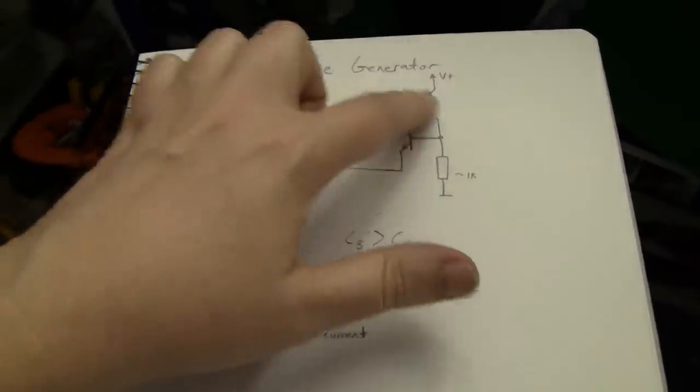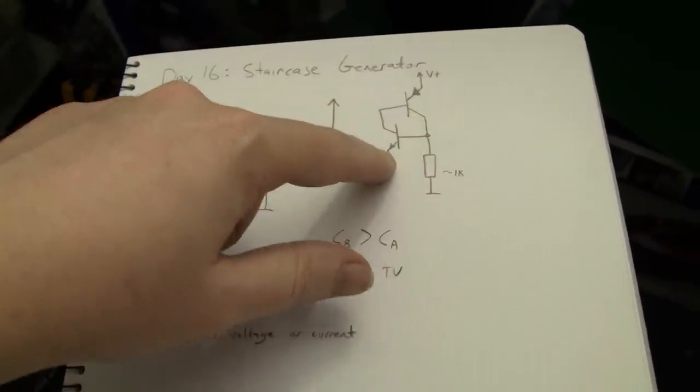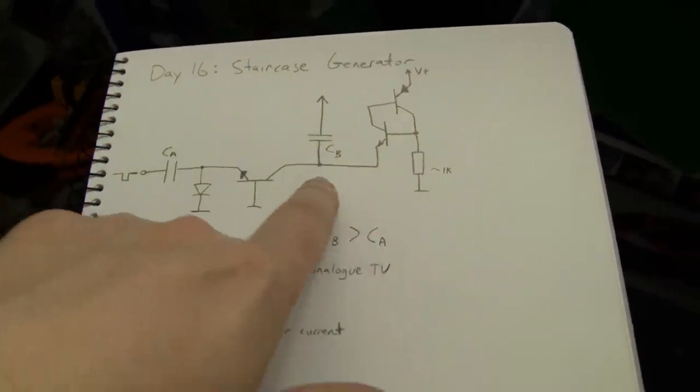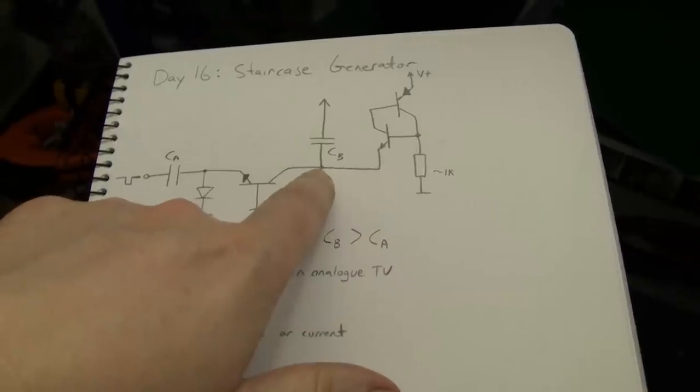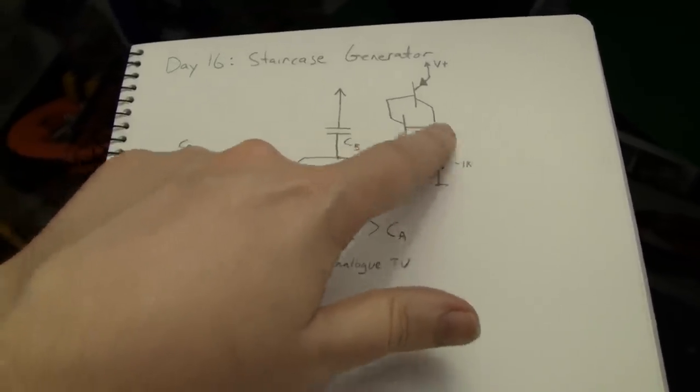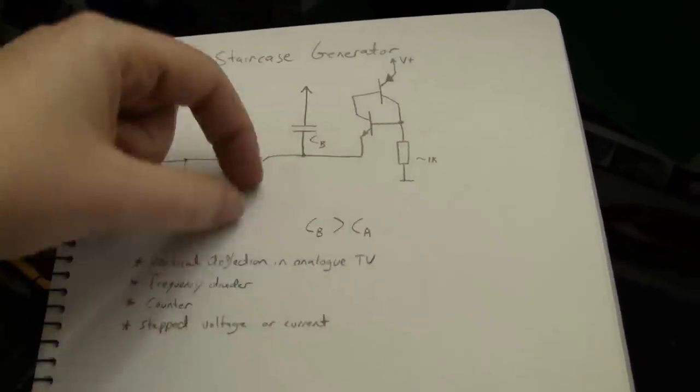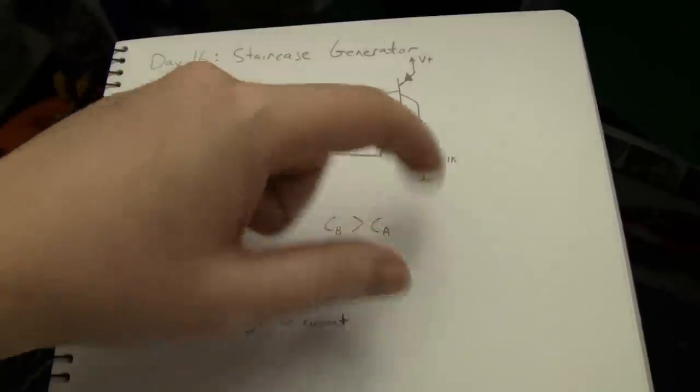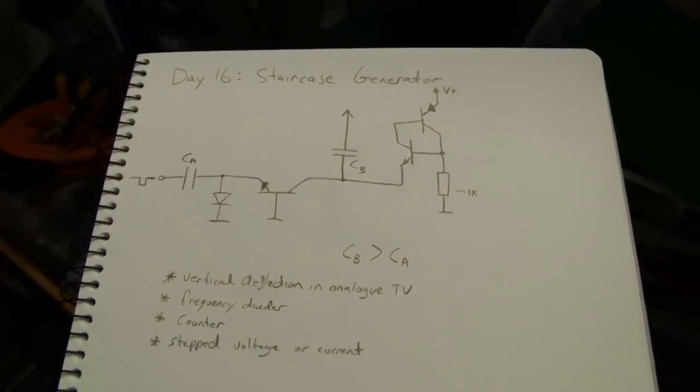What we can do though is we can set up our old favorite complementary pair circuit here, such that when the voltage on this capacitor drops below the emitter drop here that the transistor will turn on and recharge the capacitor back up until it cuts off again. It's very simple.